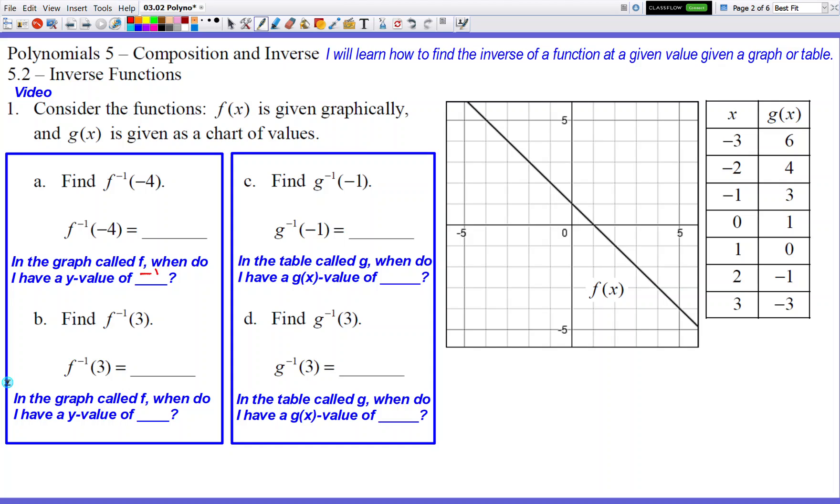So we've got a negative 4 for my first parentheses. So in my graph called f, which is right here on the right-hand side, when do I have a y value of negative 4? So here's my y value of negative 4. So what x value corresponds to a y value of negative 4? So you go straight up until you hit your x-axis, and when you go straight up, you're going to see it corresponds to a 5, and you're going to put a 5 in that spot. And there you go. Plugging in the number 5 will give you a y value of negative 4.